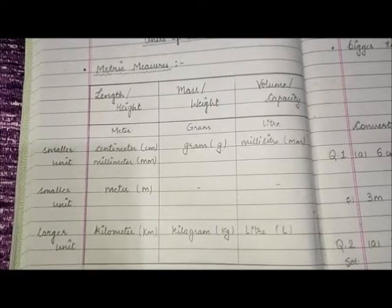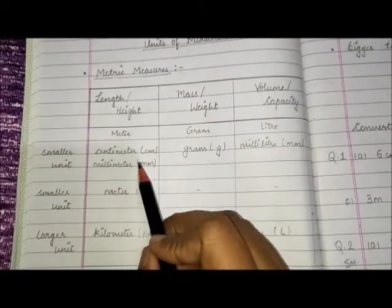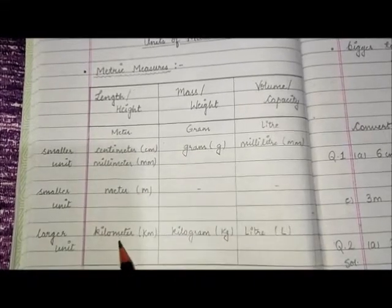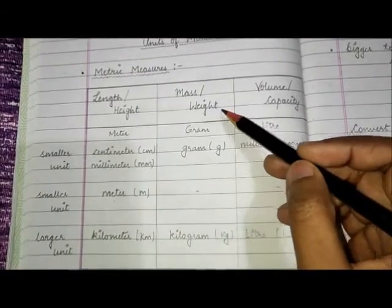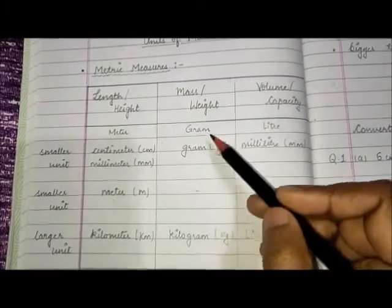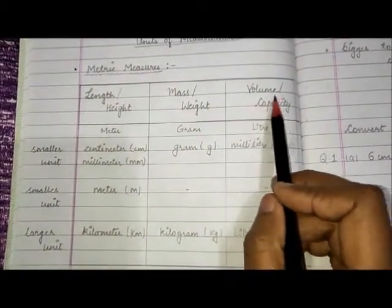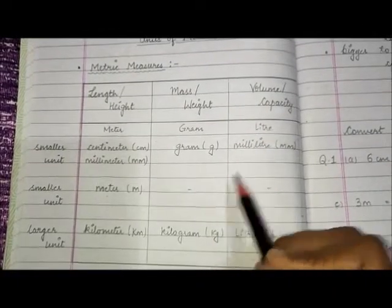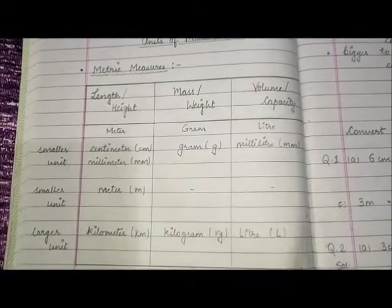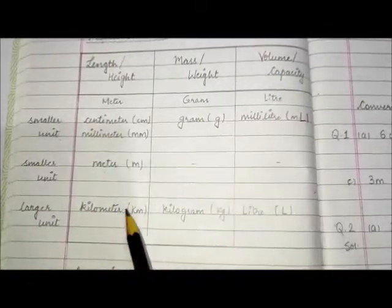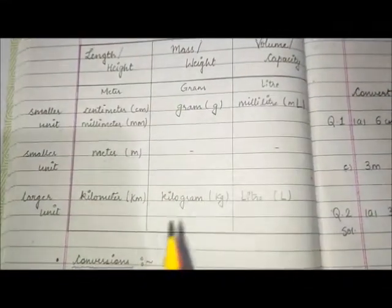The short form for centimeter is cm, for millimeter it is mm, for meter it is m, and for kilometer we use km. To measure mass or weight we use gram or kilogram — gram is the smaller unit and kilogram is the larger unit. To measure volume or capacity we use liters or milliliters — milliliter is the smaller unit and liter is the larger unit. We use these units to measure length, height, mass, weight, volume or capacity.